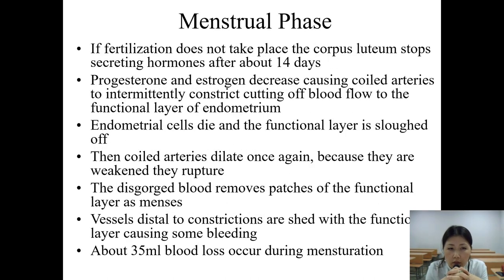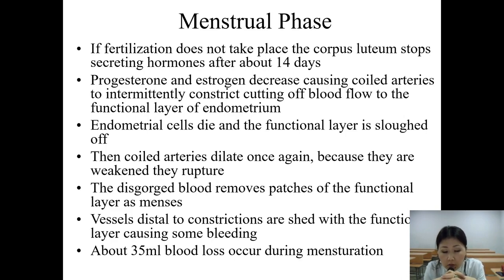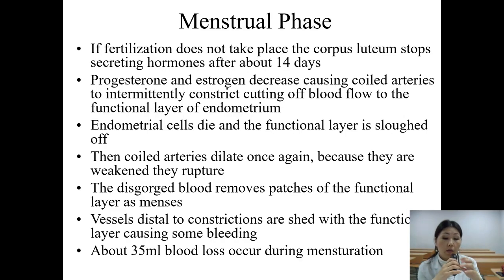During the menstrual phase, if fertilization does not take place, the corpus luteum stops secreting hormones after about 14 days. Progesterone and estrogen decrease, causing coiled arteries to constrict, cutting off blood supply to the functional layer of the endometrium. Endometrial cells die and the functional layer is sloughed off. Then coiled arteries dilate — being weakened they rupture — and blood removes patches of the functional layer as menses. Vessels distal to constrictions are shed with the functional layer. About 35 milliliters of blood loss occurs during menstruation.